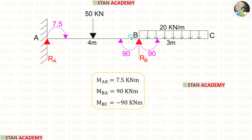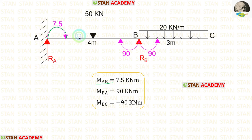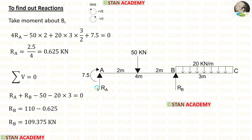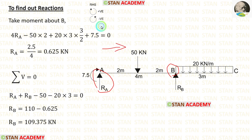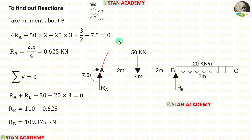Let us take the whole beam together and calculate the vertical reactions. When we take the whole beam together, we do not have to consider MBA and MBC because they will be eliminated. So we only consider MAB, which is acting in the clockwise direction. To calculate RA, I am taking moments about B, moving towards the right-hand side. Clockwise is positive and anti-clockwise is negative. RA acts towards B in the clockwise direction, so it is positive with distance 4, giving 4RA.